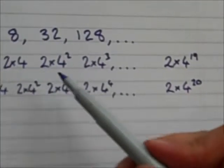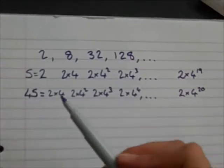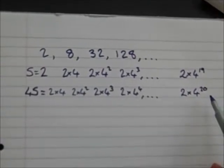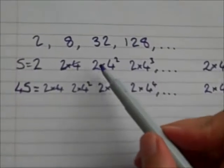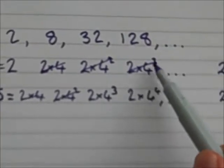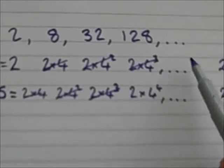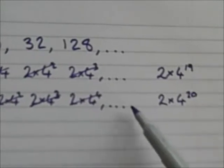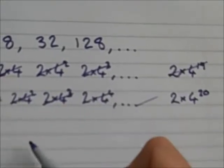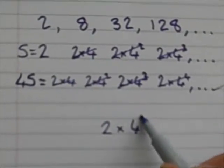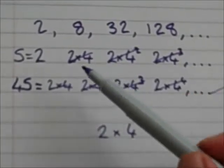Now if I subtract my original sequence from 4 times my sequence, those two terms will cancel out. I can subtract that from that, that from that. There'll be a 2 times 4 to the 4 term here which will cancel with that. My 2 times 4 to the 19 will cancel with the term here and that leaves me just with 2 times 4 to the 20 take away 2.